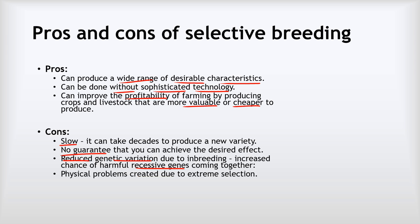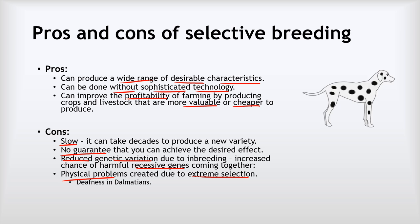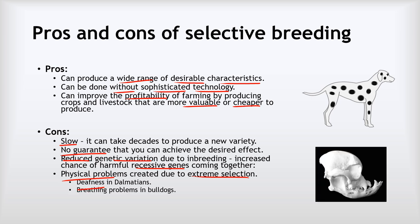We also often see physical problems caused by extreme selection. For example, the gene that leads to increased spottiness in Dalmatians is also linked to other genes that cause deafness, so a significant number of Dalmatians are deaf as a result. With bulldogs, that cute face comes because their skull is really misshaped — you can imagine how that leads to the breathing problems we often see in bulldogs, because their skull has been selected by us, producing an unhealthy structure that is no good for the animal.